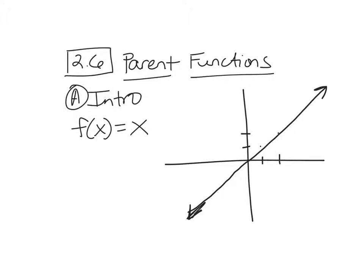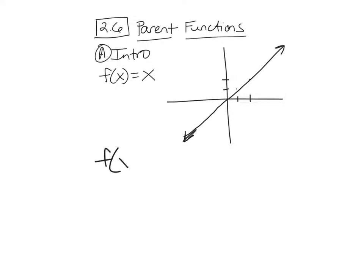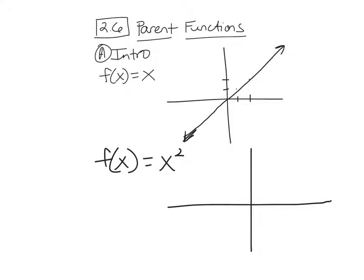That's a pretty boring one. We don't use that one too much. The other parent function we're going to use more is f of x equals x squared. Let's get some actual points on this graph. If I wanted to find out what y was when x is 0, I plug 0 in and I get 0. Plug in x equals 1, when I square 1, I get 1. If I plug in 2 for x, my y value is 4. If I plug in negative 1 and square it, I get positive 1. If I square negative 2, I get positive 4.